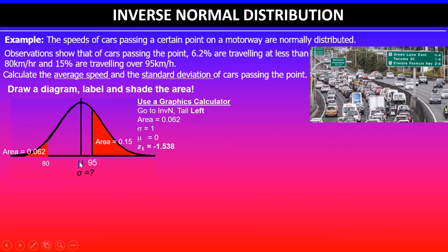Why is it negative? Because it's below 0 — if the mean is 0, then on the left-hand side all the numbers will be negative. So the first z-value is negative 1.538. We'll now repeat the process using the area of 0.15, which corresponds to above 95 kilometers per hour.